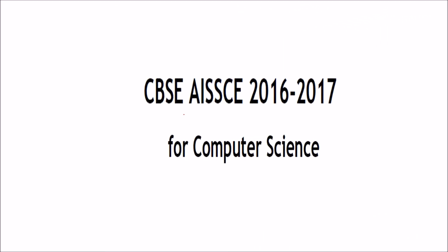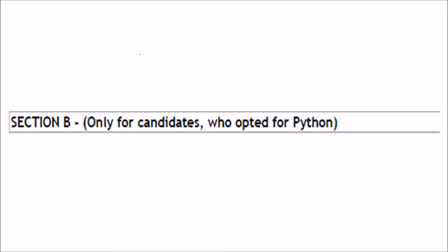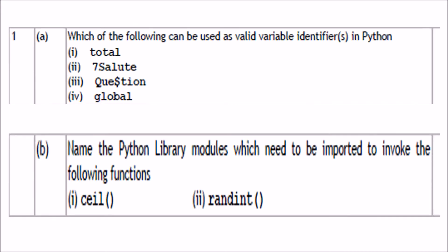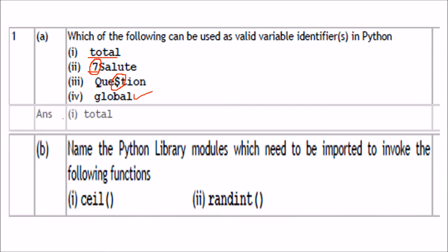We are looking at the CBSE AISSC 1617 paper for computer science, section B, only for candidates who have opted for Python. The question asks which of the following can be used as a valid variable identifier in Python. 'Total' can be used. '7' cannot start with a numeral, the other option is not allowed, and one is a keyword. So the correct answer is 'total'.